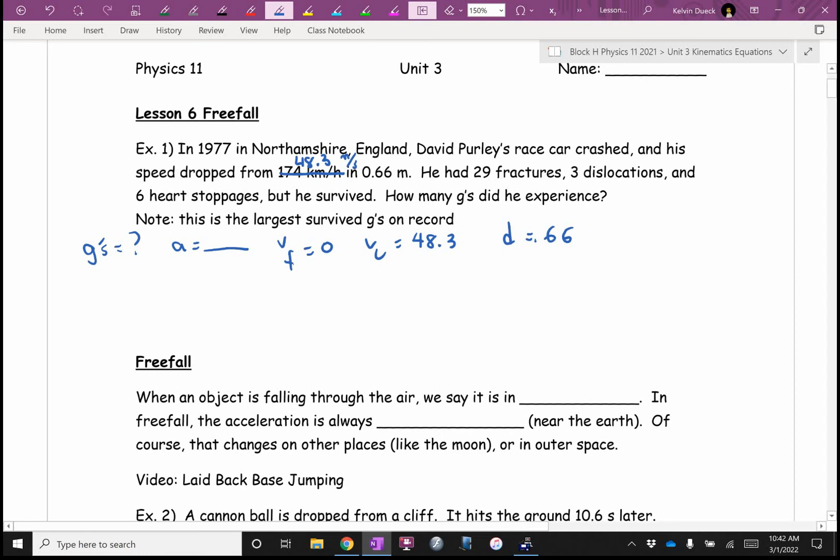Don't write it down. Instead, can you look at it? Can you get the A by itself, Jada? I'll give you a hint. A equals. Well done. If you feel comfortable going straight to the rewritten equation without writing down the original from your green sheet, knock yourself out. Let's plug in the numbers. So it's going to be 0 squared minus 48.3, don't forget the squared, all divided by 2 times 0.66.